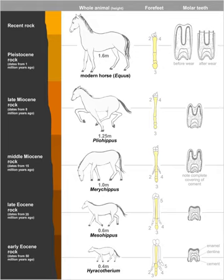Eohippus appeared in the early Eocene, about 52 million years ago. It was an animal approximately the size of a fox — 250 to 450 millimeters in height — with a relatively short head and neck and a springy, arched back. It had 44 low-crowned teeth in the typical arrangement of an omnivorous browsing mammal: three incisors, one canine, four premolars, and three molars on each side of the jaw. Its molars were uneven, dull, and bumpy, and used primarily for grinding foliage.